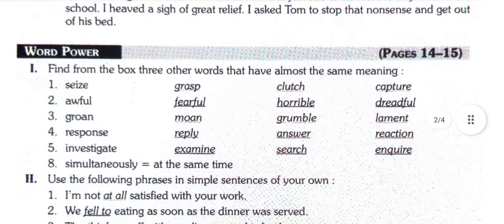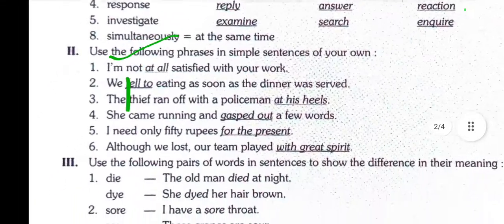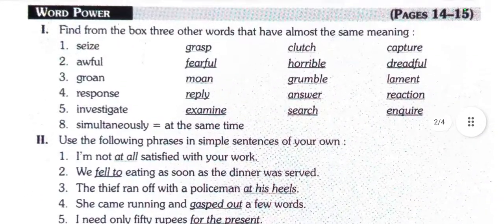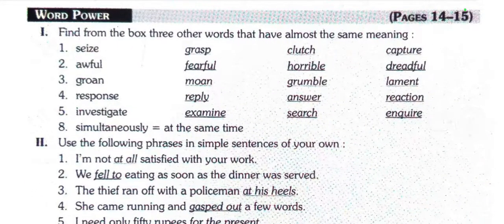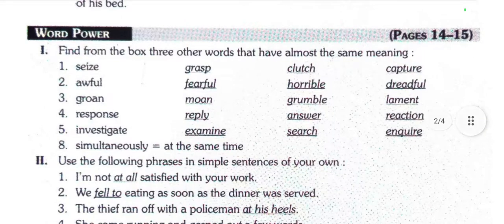Here is the word flower exercise. Find from the box three other words that have almost the same meaning. You can pause the video and write your answers. The words given include: seize, grasp, clutch, capture — these all share one meaning. For the next group: awful, fearful, horrible, and dreadful all share a similar meaning.